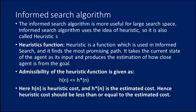Informed search algorithm contains an array of knowledge such as how far we are from the goal, path cost, how to reach the goal node, etc. This knowledge helps the agent to explore less of the search space and find the goal node more efficiently. The informed search algorithm is more useful for large search spaces. Informed search algorithm uses the idea of heuristic, so it is also called heuristic search.